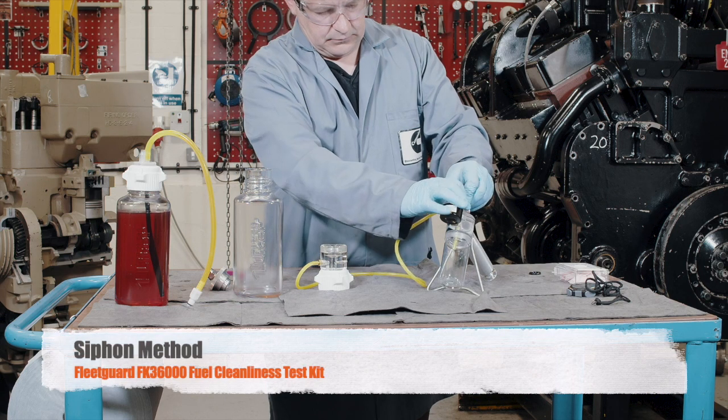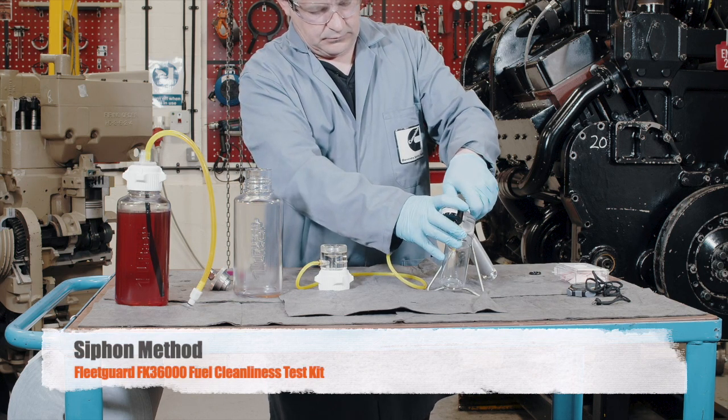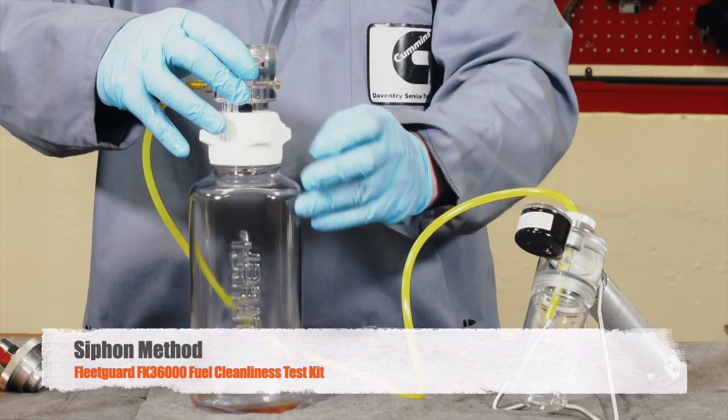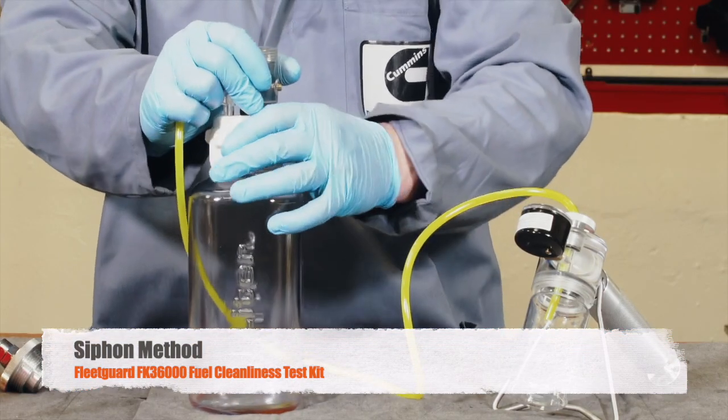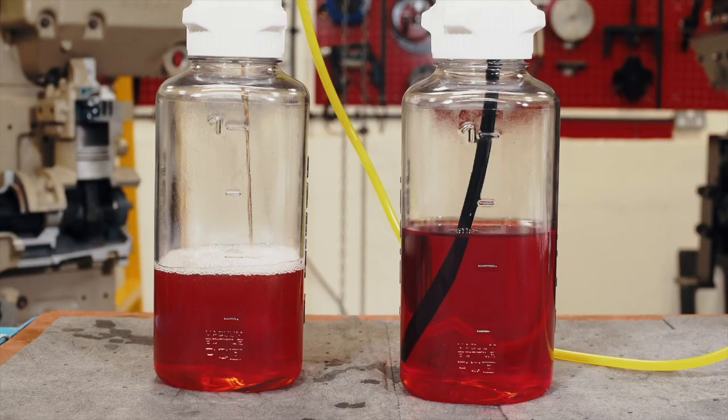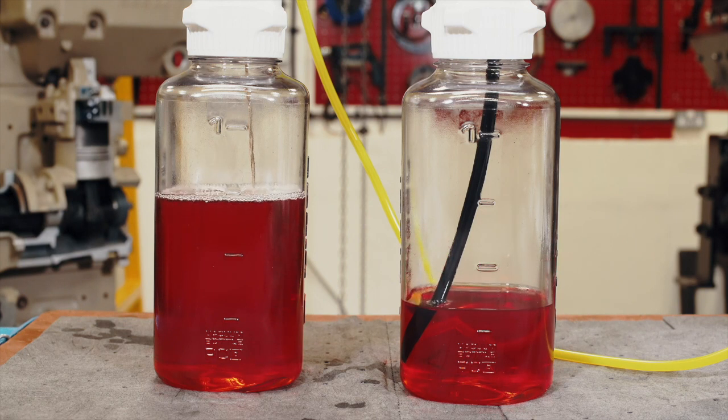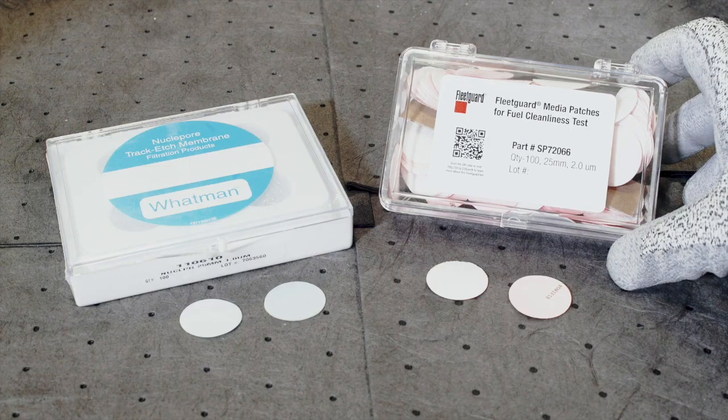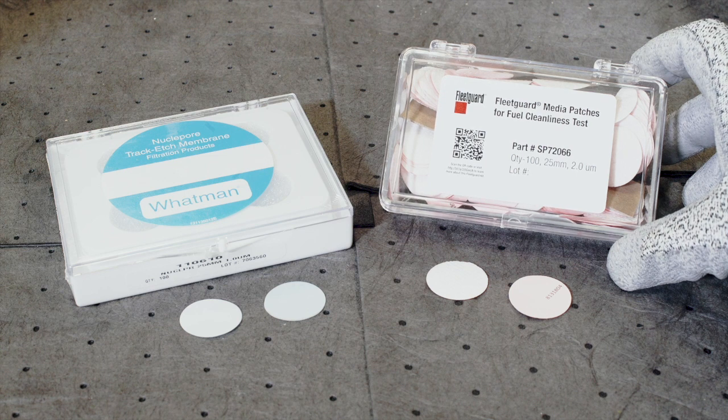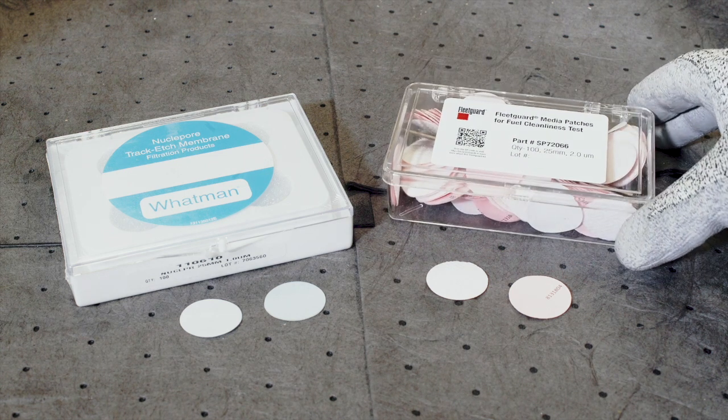Start by assembling the equipment in accordance with the instructions provided, ensuring that the vacuum hose is securely fitted onto the vacuum adapter and that the aluminium collar on the vacuum pump is tight. The siphon test method times the flow of one litre of fuel through the filter media. This test is only suitable with the two micron media; you cannot use the one micron membrane for the siphon test.